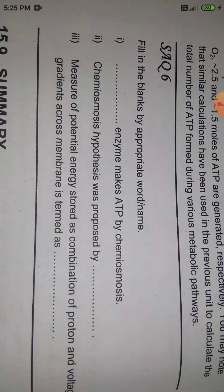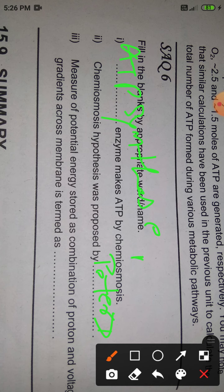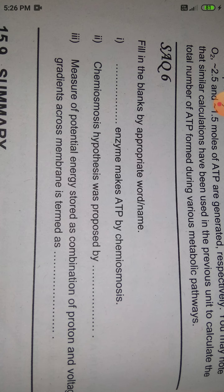The last question, number six, is fill in the blanks with the appropriate word or name. The enzyme that makes ATP by chemiosmosis is ATP synthase. The chemiosmosis hypothesis was proposed by Peter D. Mitchell. The potential energy stored as a combination of proton and voltage gradient across the membrane is termed the proton motive force.